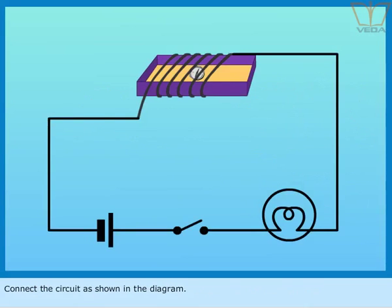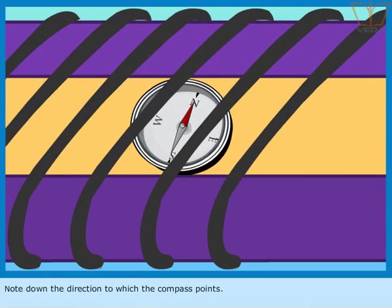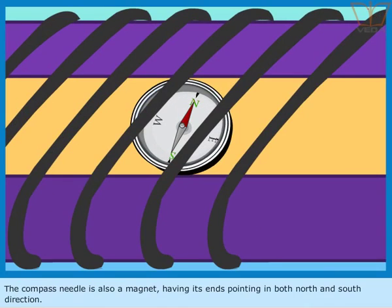Connect the circuit as shown in the diagram. Note down the direction to which the compass points. The compass needle is also a magnet, having its ends pointing in both north and south direction.